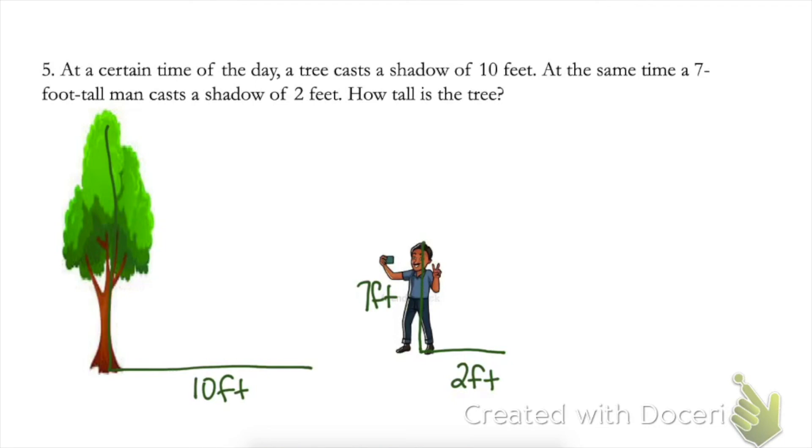So here I've labeled my 10 foot shadow for my tree, and my seven foot tall man, which is pretty tall, and his two foot long shadow. We need to find how tall the tree is. So I'm going to label that side as X. Now I have two similar triangles. And let me tell you why.